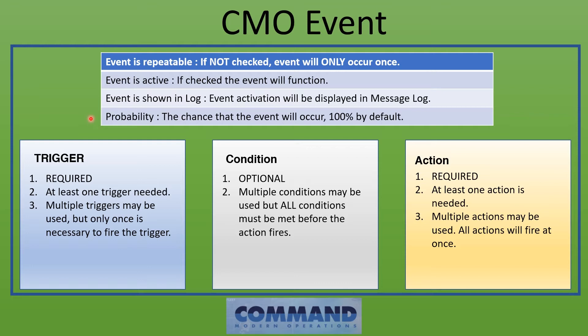Next is the probability. By default this is 100% — every single time the event triggers and meets the condition, it will perform the action. However, say you don't want it to happen 100% of the time. For example, if the event is repeatable and triggers every 15 minutes, you could set a 25% chance that some mission activates.